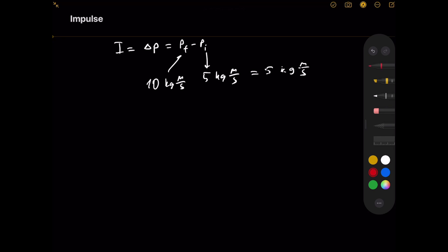Of course, this is a very simple problem if it is asked like this, but we will also deal with more interesting problems. And also, even though this set of units is correct, kilograms times meters per second, because momentum is mass times velocity by definition, while dealing with impulse, we often use another unit which is equivalent.